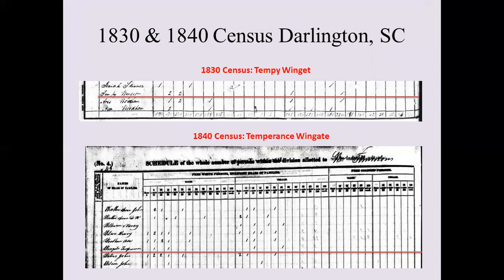These are the two census records she appears in in Darlington, South Carolina. In 1830 she's listed as 'Tempe' with the name almost spelled 'Wingate.' Whenever you find your ancestor on a record, especially females, record that name as it is spelled on the actual record — it very well might have been a nickname. You want to follow up and see if that nickname stays the same or changes over time, or if they go by their middle name. Sometimes it can have to do with where they move and interpretation of an accent as to how it's spelled.